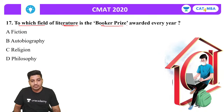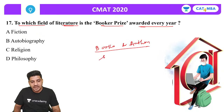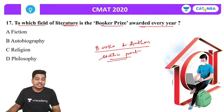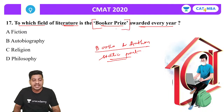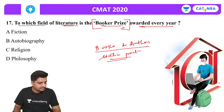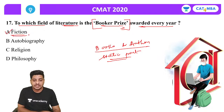Next question: To which field of literature is the Booker Prize awarded every year? Books and authors includes both dynamic and static GK. The correct answer is fiction — the Booker Prize is awarded for fiction.